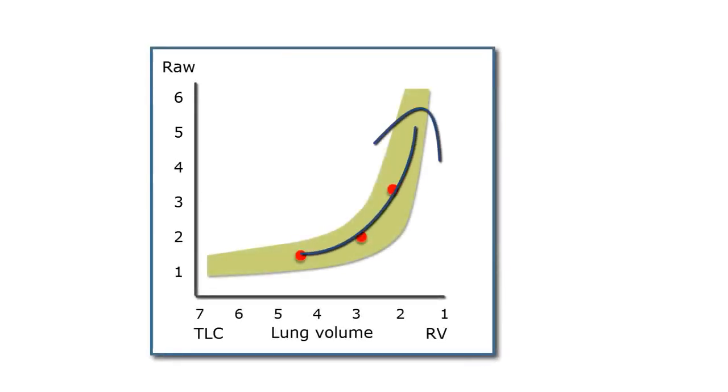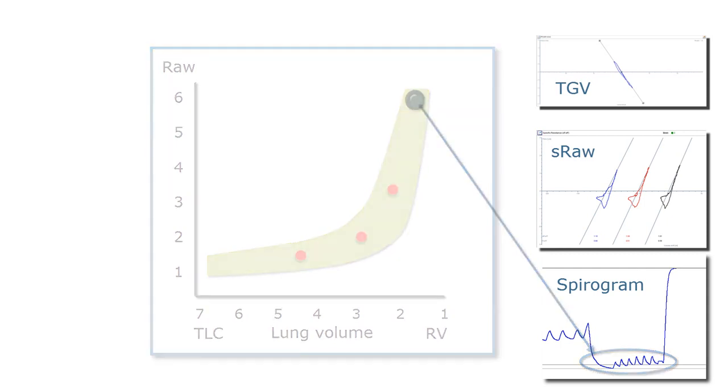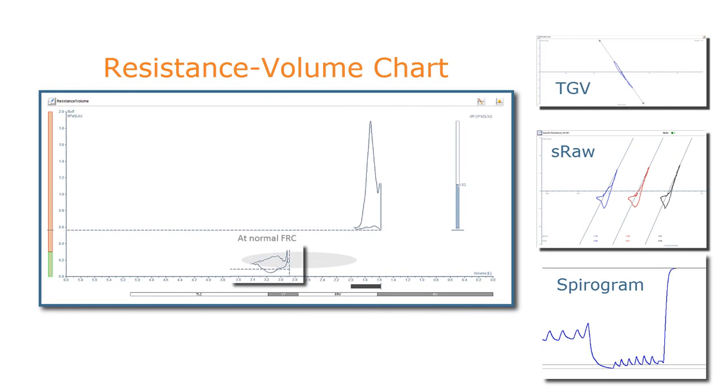The opposite will happen when you are breathing in the direction of residual volume, resulting in an increase of airway resistance. Let's assume that we are breathing at a very low breathing level, near residual volume. When we look at the resistance-volume chart, we can immediately see that the surface of the resistance-volume loop has increased enormously. The airway resistance has also increased, and it is clear that the measurement was performed at very low breathing level.